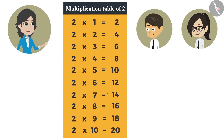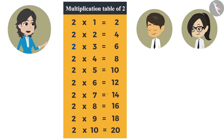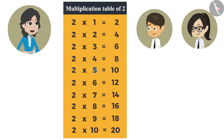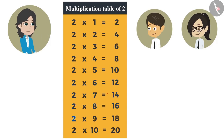We remember the table of 2 like this: 2 ones are 2, 2 twos are 4, 2 threes are 6, 2 fours are 8, 2 fives are 10, 2 sixes are 12, 2 sevens are 14, 2 eights are 16, 2 nines are 18, 2 tens are 20.